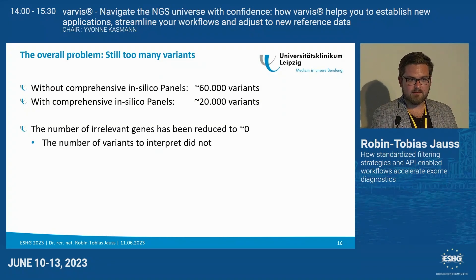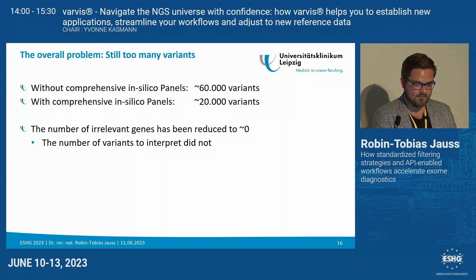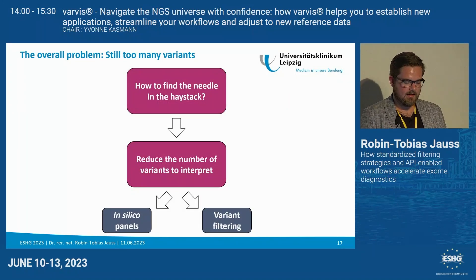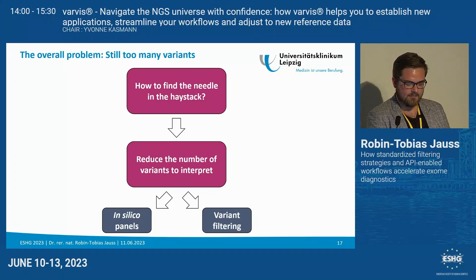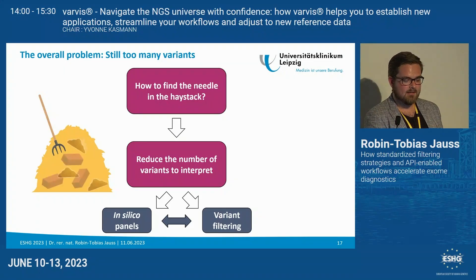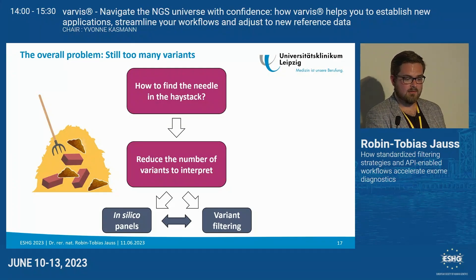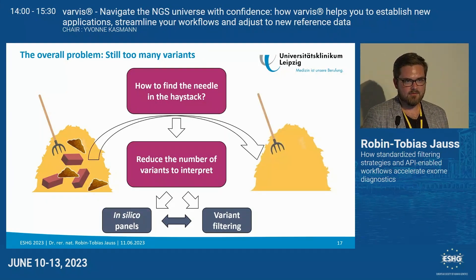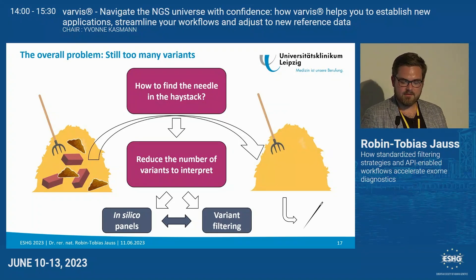As you can see, the number of variants to interpret did not reduce to one — the one variant we want to identify. Coming back to the decision tree, we observe that in silico panels and variant filtering have to come hand in hand. Without in silico panels, we realize we are not just looking at a haystack, but at a pile with bricks, dirt, and all kinds of other material we do not want in our diagnostic routine. In silico panels reduce this pile to the haystack, and efficient variant filtering then retrieves the needle.